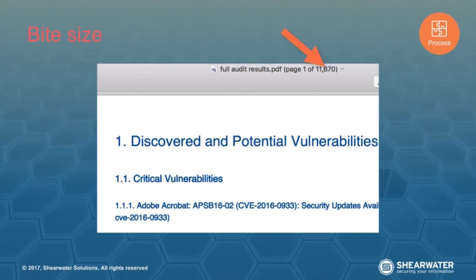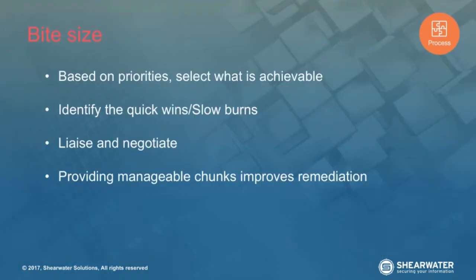So we take it down to bite size. We look at the priorities, select what's achievable, and look at the quick wins and slow burns. The Windows Display Last Username is a quick win because it's a simple group policy change affecting all systems, takes five minutes, and the risk to the organisation is nil. A slow burn might be patching a whole swath of critical production systems, which requires more testing and more effort. Once you've broken it down into smaller portions, you need to liaise and negotiate with the different teams to get it done.